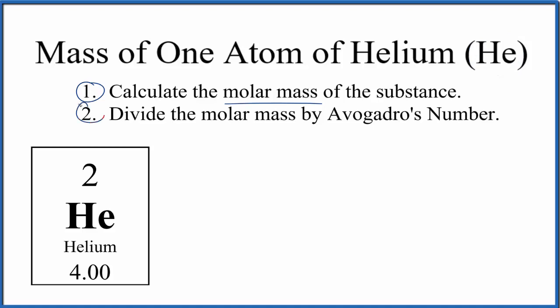Then we'll divide the molar mass by Avogadro's number. This is Avogadro's number right here - it's the number of particles like atoms or molecules in one mole. So the molar mass, right here, helium is 4.